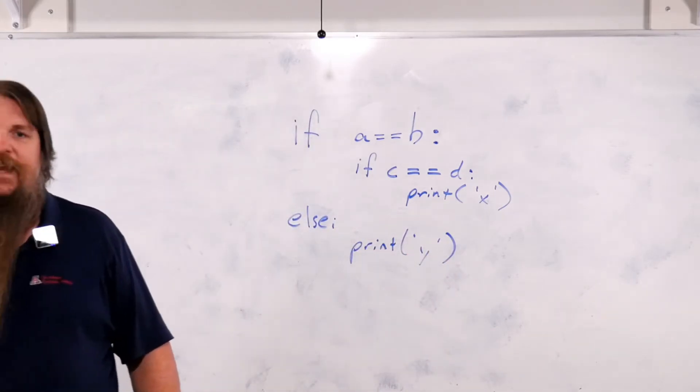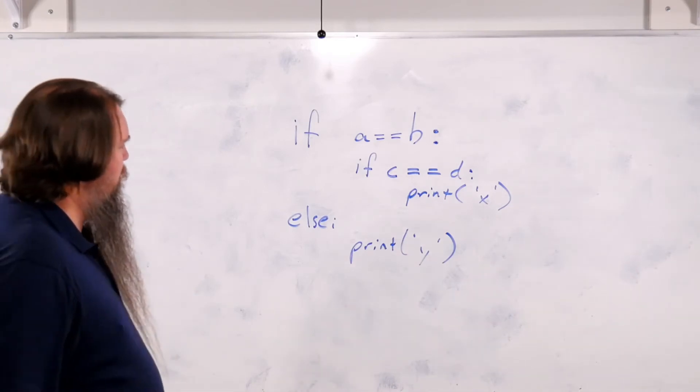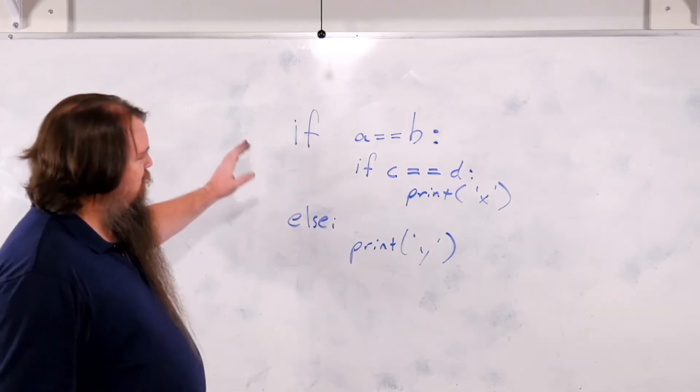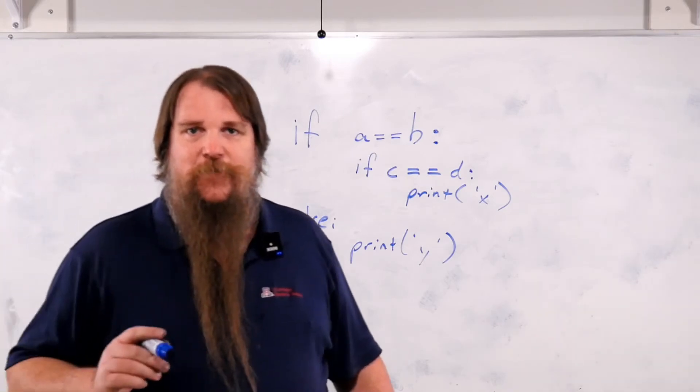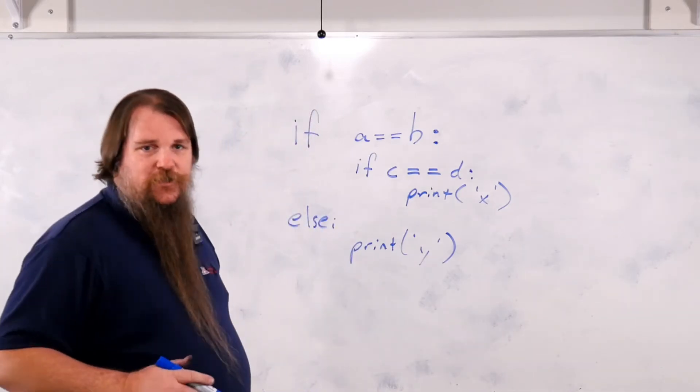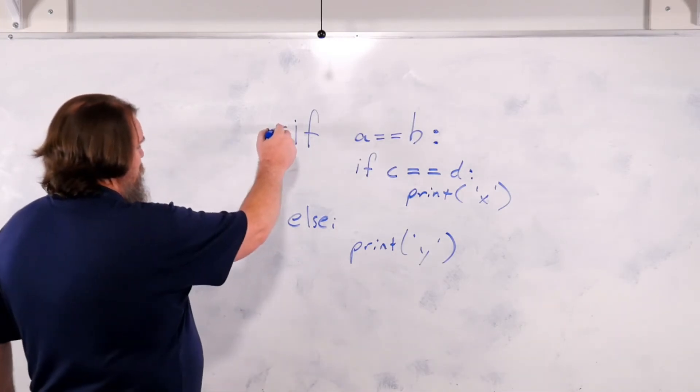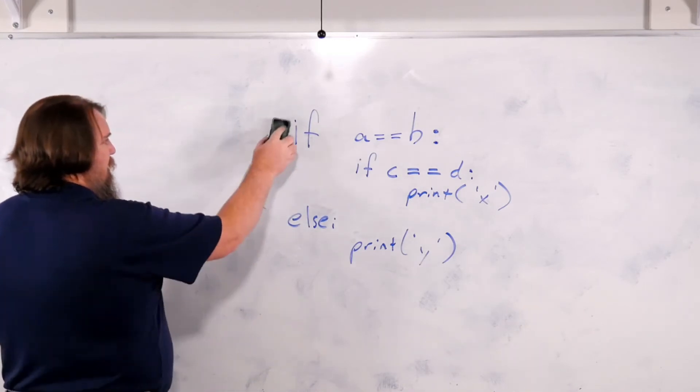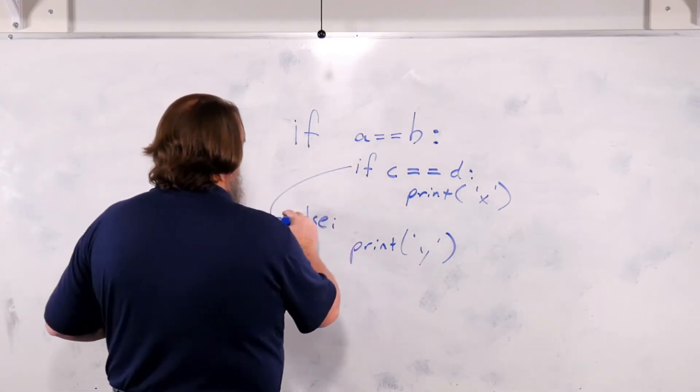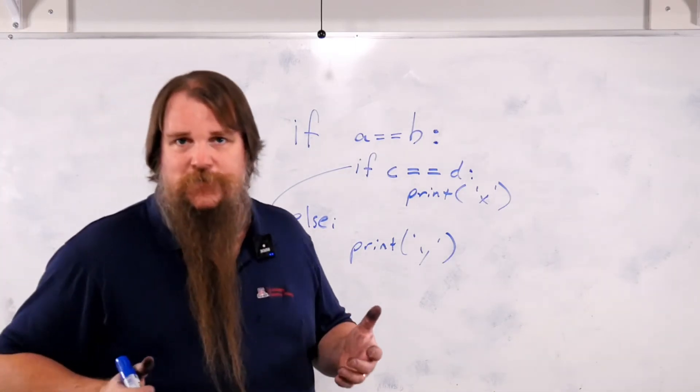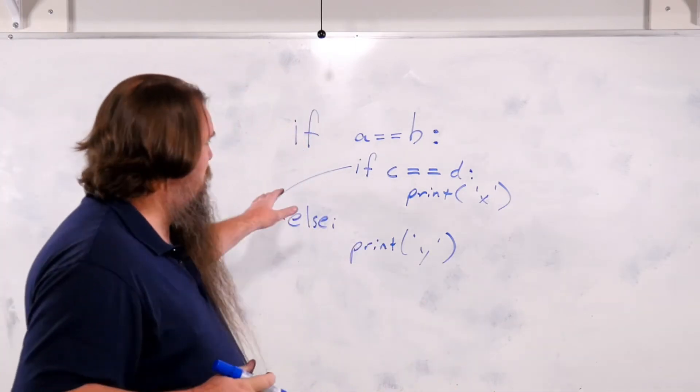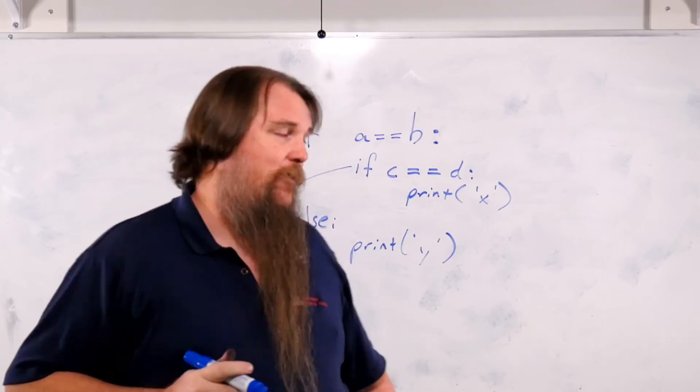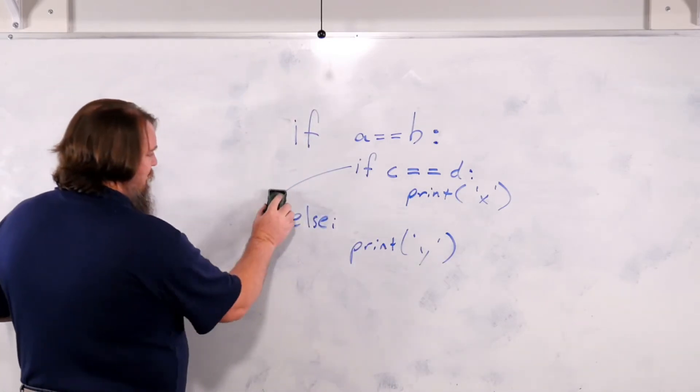Alright, so this is a classic problem from computer science: the question of how to parse this. Because if you just read it off without caring about indentation, there's two reasonable ways you could interpret this. You could say that this if is connected to this else, or you could say that this if is connected to the else. In C++, in Java, in JavaScript, the way we solve this is by putting in curly braces at specific locations to group blocks together. But in Python, we solve this with indentation.